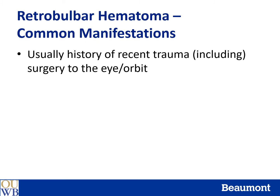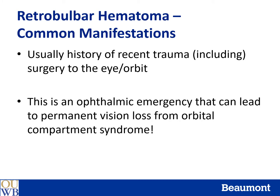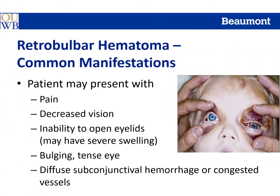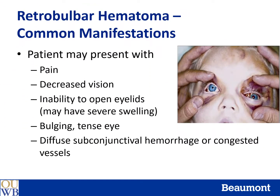Lastly, we'll discuss retrobulbar hematomas or hemorrhages. There is usually a history of recent trauma, and this includes surgery to the eye and/or orbit. A retrobulbar hemorrhage is considered an ophthalmic emergency that can lead to permanent vision loss from orbital compartment syndrome. The patient may present with pain, decreased vision, and inability to open their eyelids due to severe swelling, a bulging or tense eye, or a diffuse subconjunctival hemorrhage or congested conjunctival vessels.